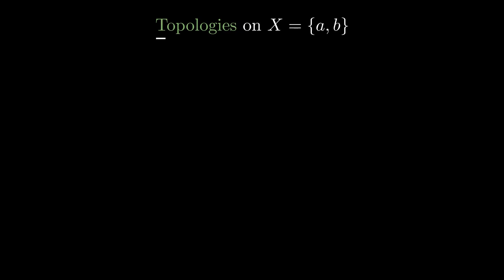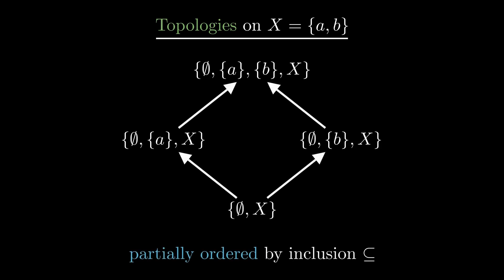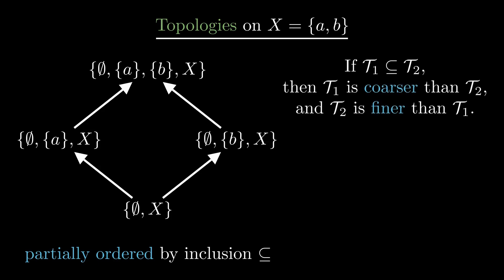So let's look at a simple example: the topologies on a two-element set. We have the trivial topology and the discrete topology. Additionally there are two topologies in which just one one-point set is open. We can partially order these topologies by inclusion. If the topology t1 is included in t2, then t1 is called coarser than t2, and t2 is finer than t1.